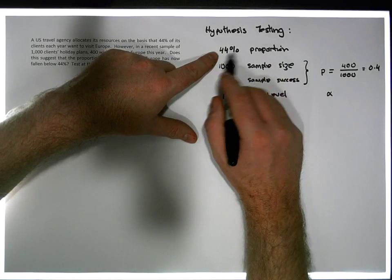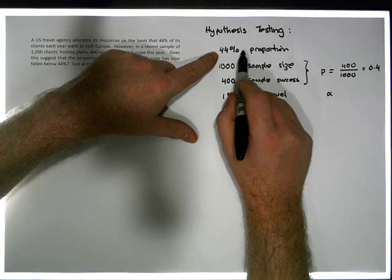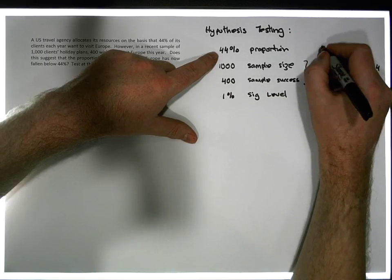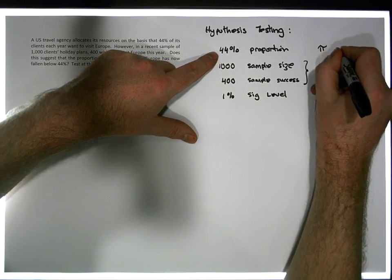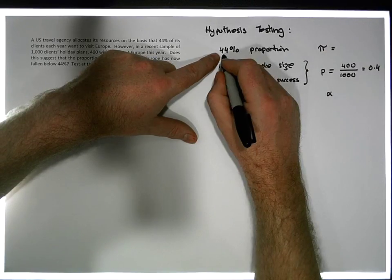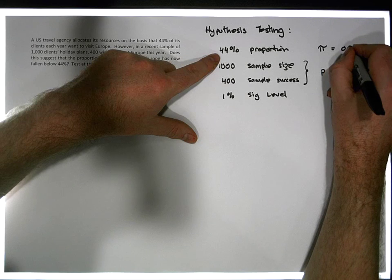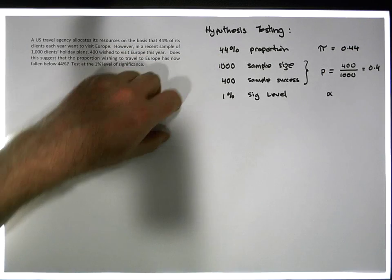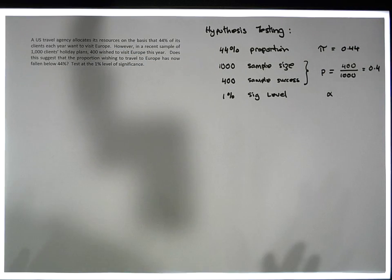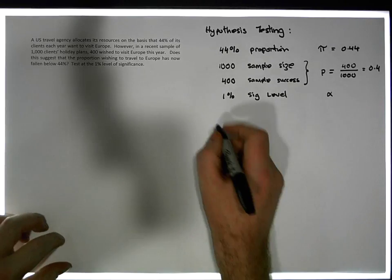And then we have our population proportion. This is the behaviour that's been going on up to this particular moment in time. We have the population proportion, which is symbolized by pi, and that's equal to 44%, which is 0.44 as a decimal.